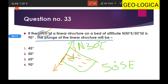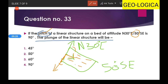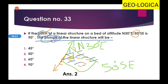If the pitch is 90°, moving 90° from the strike brings you exactly to the dip direction, so the linear structure aligns with the dip direction. Since the linear structure plunges in the same direction as the dip of the bed, the plunge equals the dip — that is 50°. The second option is the right answer.